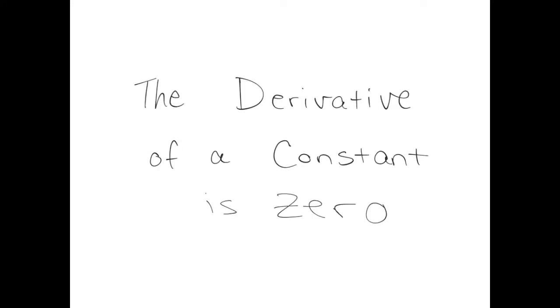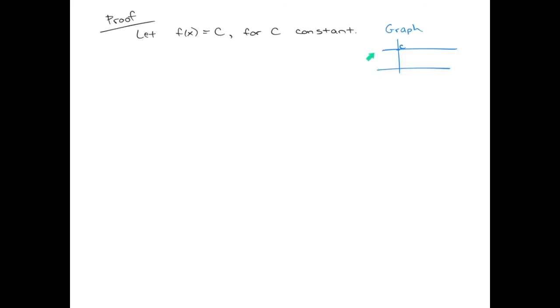The first rule is that the derivative of a constant is zero. The graph of a constant function is just a straight line. Because the function is constant,